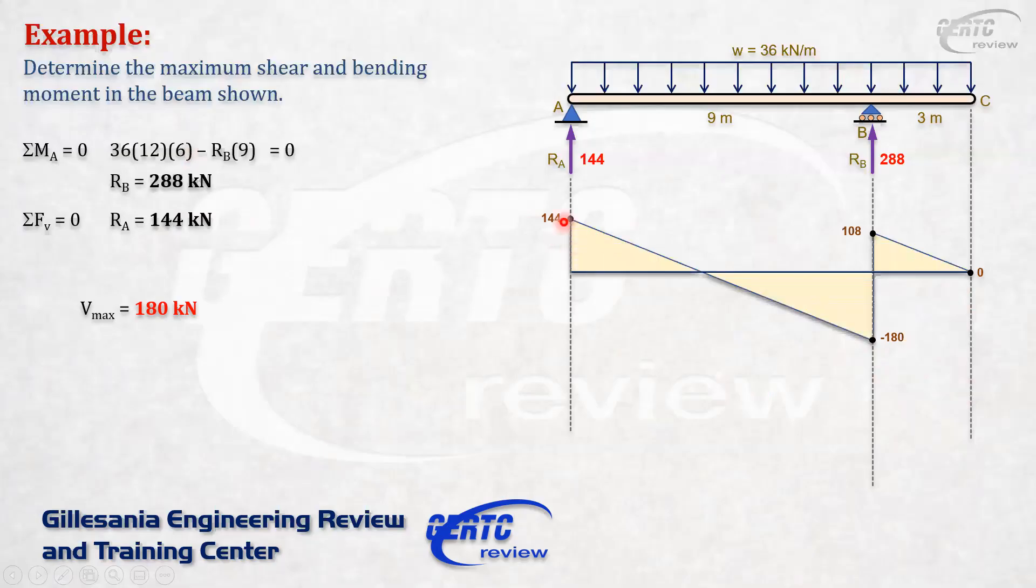This is now your shear diagram. Why is it straight line? Because our load, what's the principle? The load is the slope of the shear diagram. We have a uniform negative load, so the slope of our shear diagram is uniform negative. That's why it goes down.